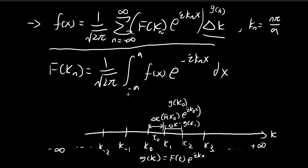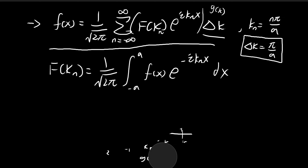The only thing stopping this from becoming an integral is that the intervals are still too large. Right now the interval Δk is equal to π over a, which is far from an infinitely small interval. For a true integral we need something like dk — an infinitely small interval — but π over a is actually a pretty large interval. So in order to change this into an integral, we need to make our intervals infinitely small, and we can do that by taking the limit as a tends to infinity.